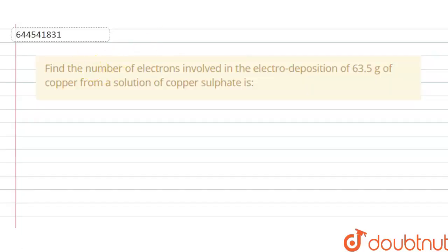Hello students, today our question is find the number of electrons involved in electrodeposition of 63.5 grams of copper from a solution of copper sulfate.